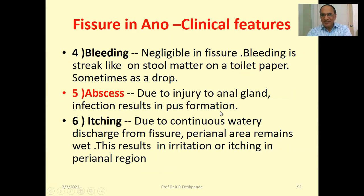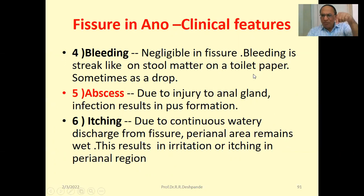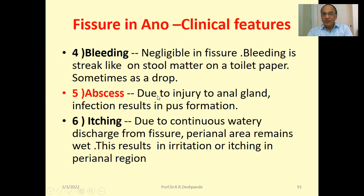Bleeding in fissure is negligible — like a streak line on the stool matter or on toilet paper, sometimes a drop. Remember, painless bleeding is a feature of piles, not fissure — fissure is associated with pain. Abscess can occur due to injury to the anal canal and anal gland infection resulting in pus formation. Itching occurs due to continuous watery discharge from the fissure, keeping the perianal area wet and causing irritation.